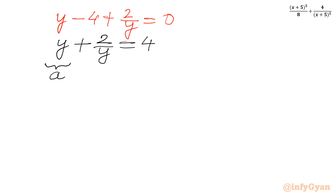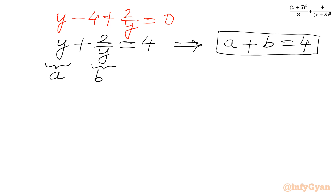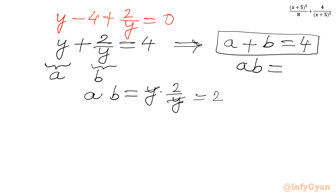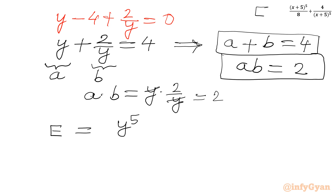I will let a = y and b = 2/y. From y + 2/y = 4, we get a + b = 4 as our first equation. Multiplying a and b: a × b = y × 2/y = 2, so ab = 2. Our target expression is y⁵/8 + 4/y⁵, which we will now evaluate.